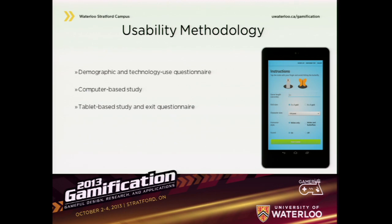Once we developed this game, we conducted a three-part usability study at the University of Toronto and gathered three types of data. We looked at demographics of our users and their technology experience and usability abilities. Then we conducted computer-based tests looking at different cognitive abilities — specifically the Stroop task, the Wisconsin card sorting task, and a colour monitoring task. Finally, we had participants play the whack-a-mole game, which we modified in terms of target sizes, colours, and how many characters they would see at once.